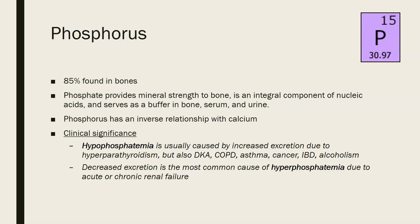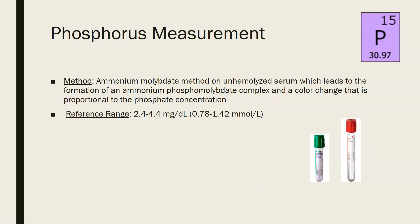Hypophosphatemia is usually caused by increased excretion due to hyperparathyroidism, but also by DKA (diabetic ketoacidosis), COPD, asthma, cancer, immobility disorders, or alcoholism. Decreased excretion is the most common cause of hyperphosphatemia, which is most often due to acute or chronic renal failure.